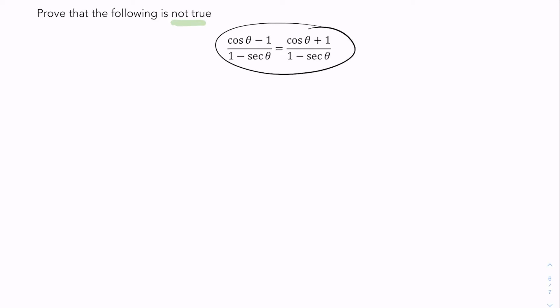So I have this apparent identity here and I want to show that this is not true for all theta. So let me find one theta for which it is false. Now I'm going to just pick one at random.